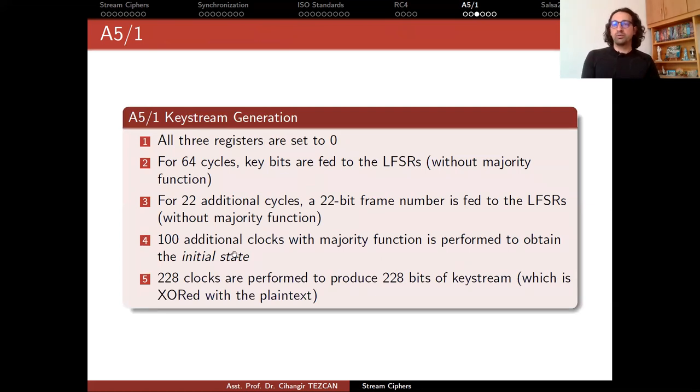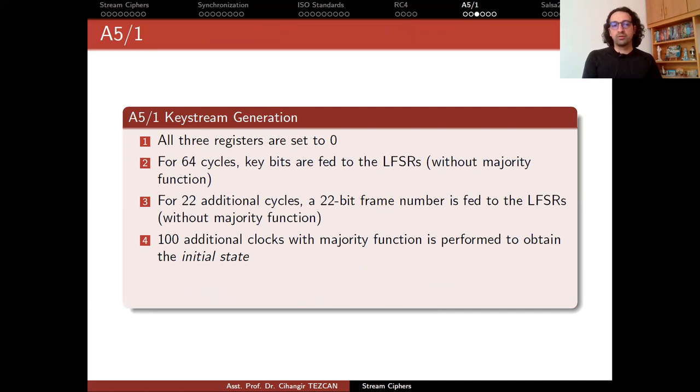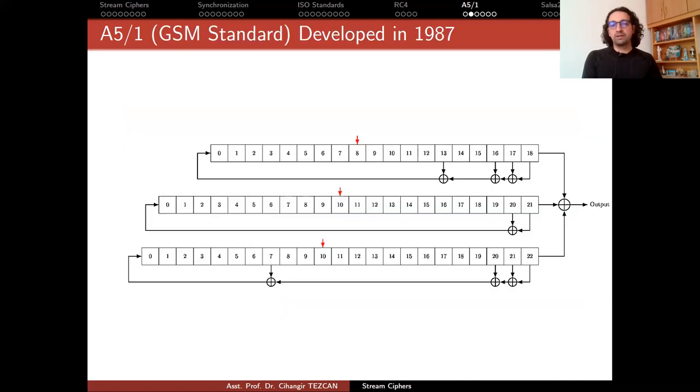At this point, you can produce key stream. You run it 228 clocks to produce 228 bits of key stream. Remember that this is twice the number of bits that the channel actually allows you in a single burst. So after you obtain the initial state, you run it 228 times to produce the output from here, which is then XORed with the plain text and the ciphertext is obtained.